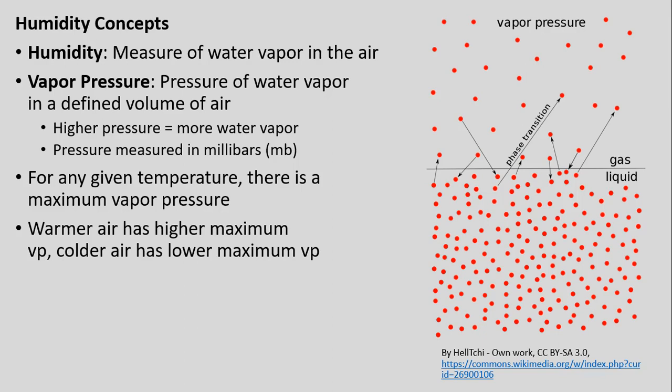When we're talking about humidity, we're essentially talking about a measure of water vapor in the air. There are a variety of metrics and units, but we're going to use vapor pressure — essentially measuring the pressure of water vapor in some defined volume of air. The higher the pressure, the more water vapor. Think of water molecules bouncing around with the many other gases in the atmosphere. This pressure is measured in millibars.